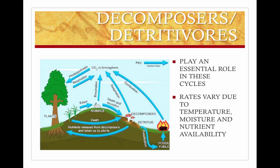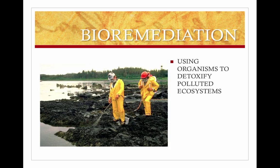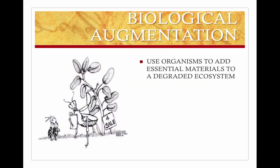Decomposers play an essential role in the cycling of nutrients, and if it wasn't for them, the earth would be piled deep in debris. Bioremediation is using organisms to get rid of pollution — two examples are using bacteria to get rid of waste in sewage treatment plants, and using engineered bacteria capable of consuming oil and breaking it down into harmless compounds in oil spills. Biological augmentation is a process where we use organisms to add essential materials to an ecosystem that is lacking something — for example, growing legumes in areas disturbed by mining to add nitrogen back to the soil.